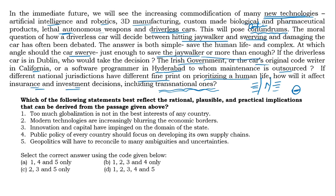Let us read the statements. You have to find what the author is coming to tell indirectly. Statement 1: 'Too much globalization is not in the best interests of any country.' Extreme statement and no mention of globalization in the passage — incorrect. Statement 2: 'Modern technologies are increasingly blurring the economic borders.' Reading the last few lines about the driverless car in Dublin — the Irish government, the California code writer, the Hyderabad programmer, and the transnational insurance and investment decisions — the author is telling this indirectly. Statement 2 is correct.